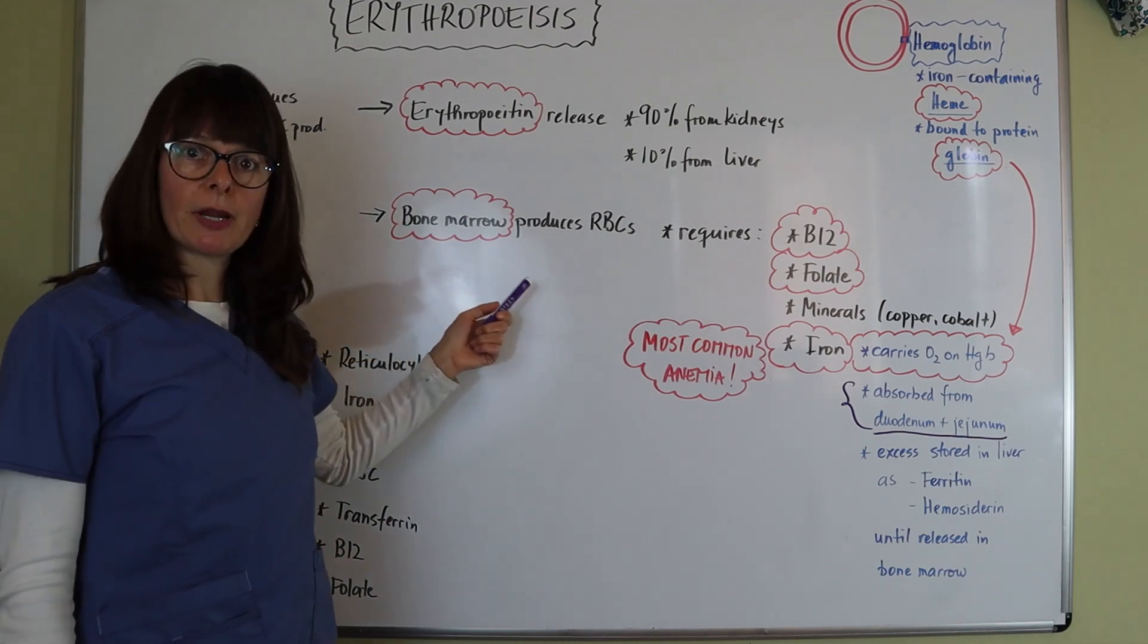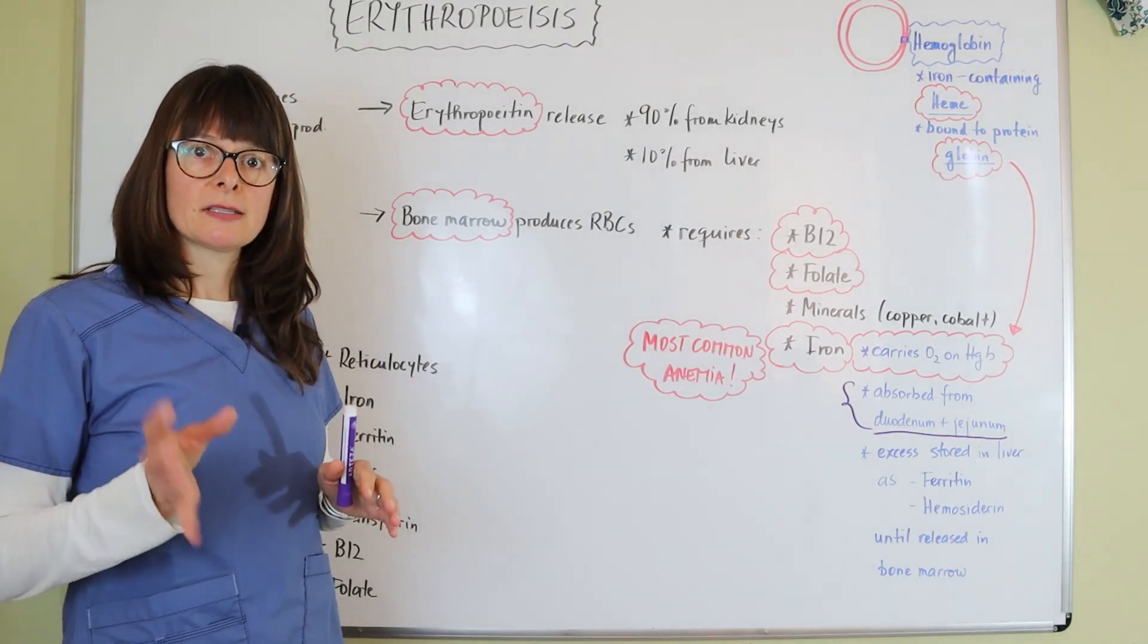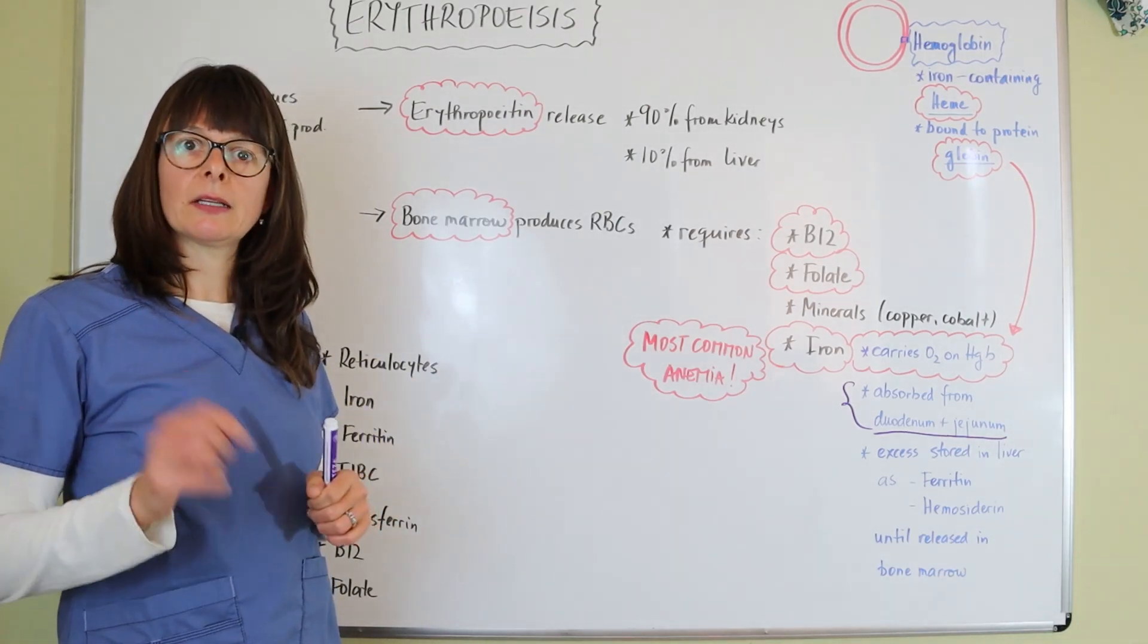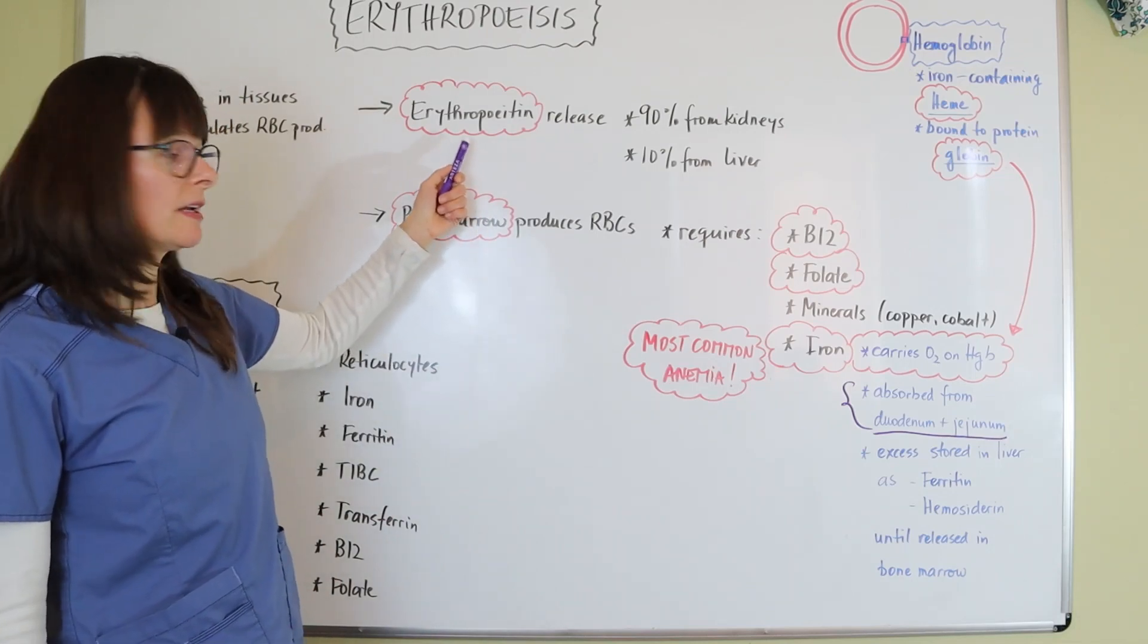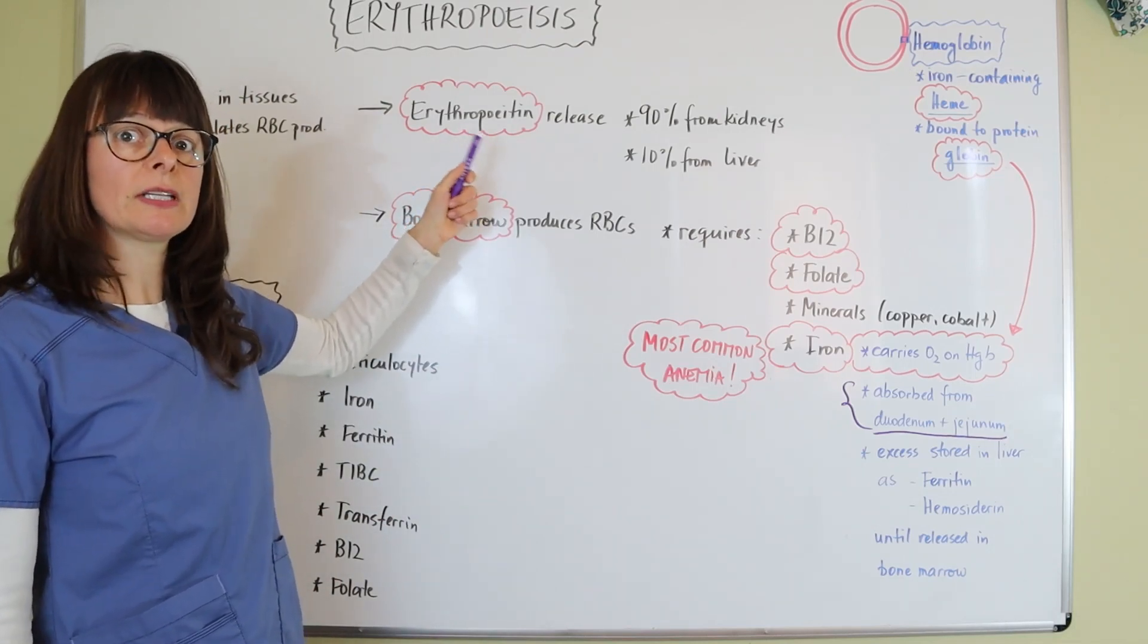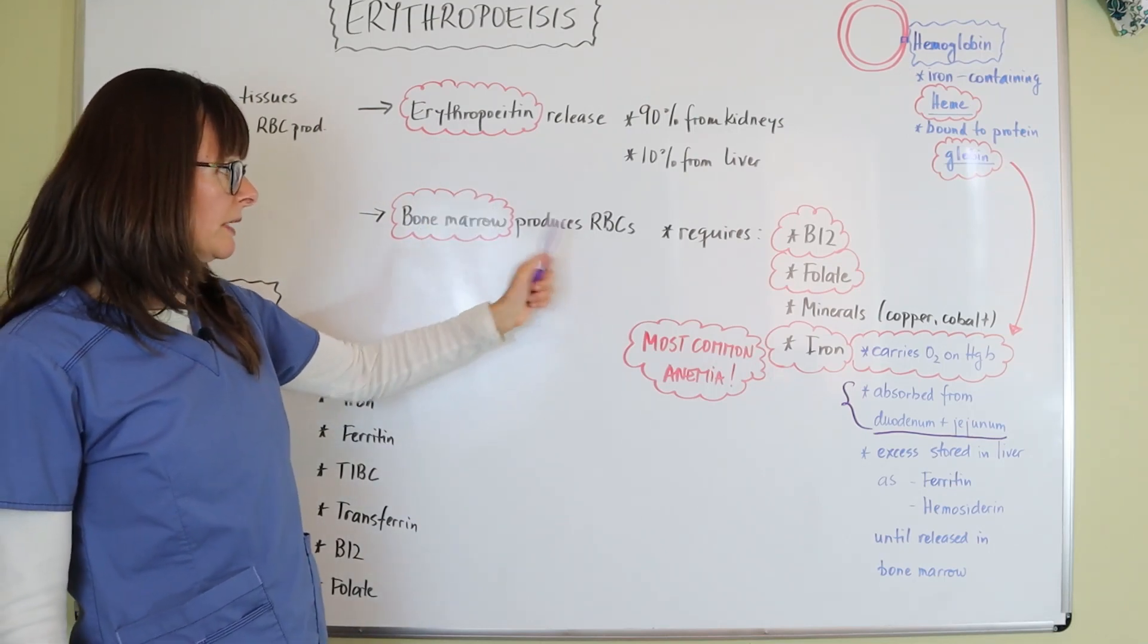Remember that the bone marrow has these undifferentiated stem cells that can develop into any cell that we need, whether it's a platelet, white cell, or red cell. But the erythropoietin here tells it we need red cells, we need these erythrocytes. And so the bone marrow then produces the red blood cells.